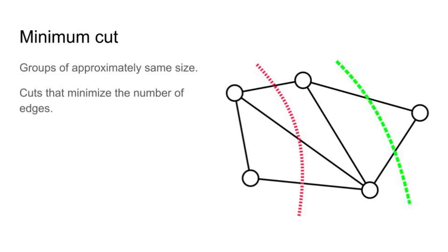We now come to one of the first and simplest algorithms for detecting communities. You ask it to divide the network into a certain number of communities, and it will try to divide the network into as many equal parts as possible — containing as many nodes as possible — where the separation between communities, called the cut, passes through the least number of edges. In a weighted network, the sum of the weights of the cut edges is minimized. In the picture you can see two cuts: the green cut passes through two edges and the red cut through three, so the green cut would be the result of a min-cut algorithm on that network.